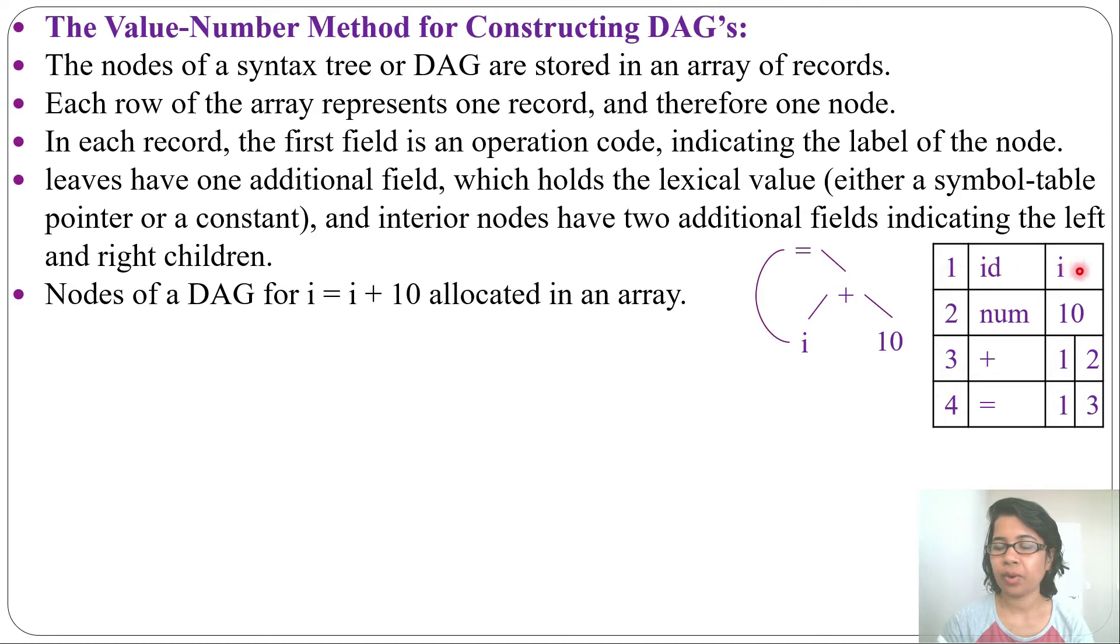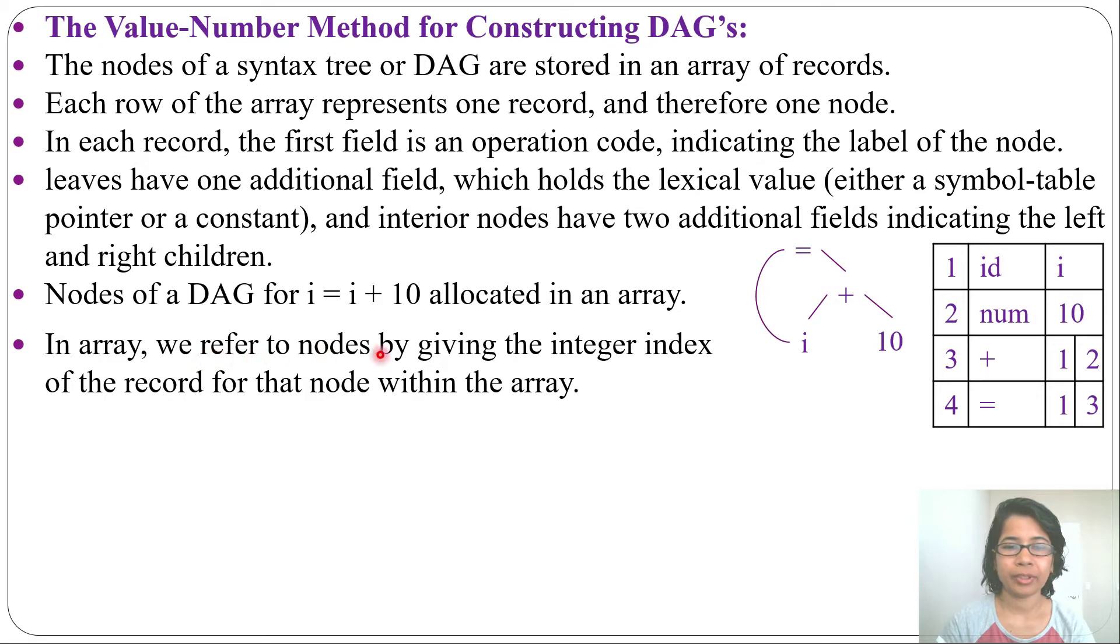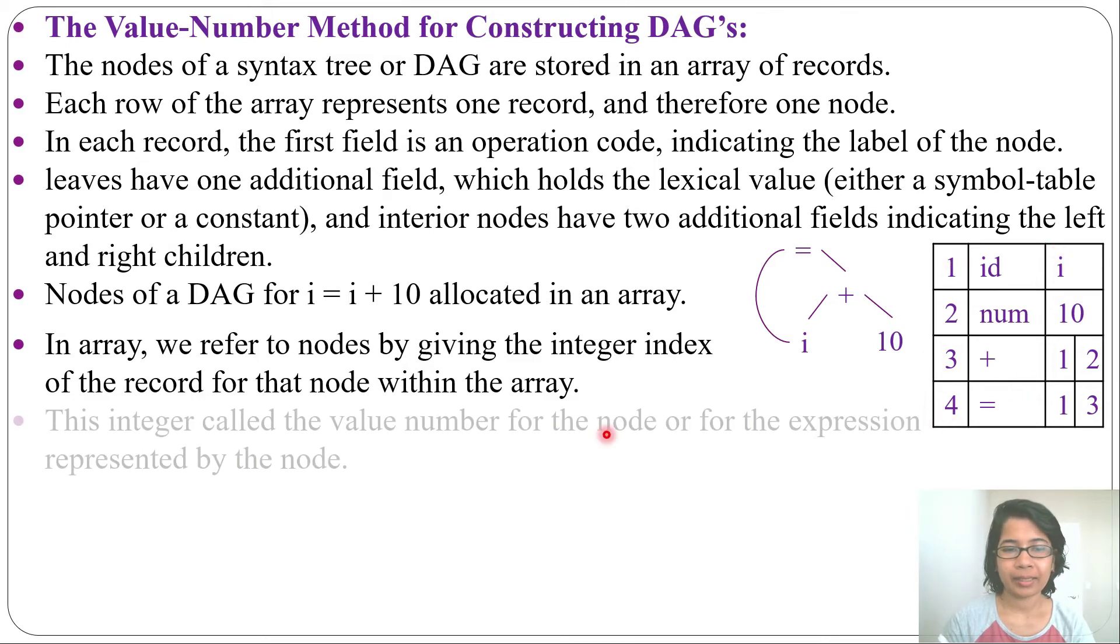We are referring one node by just its value number. In array, we refer to nodes by giving an integer index of the record for that node within the array. So these are the integer indices, 1, 2, 3, 4, these are the integer indices within the same array.